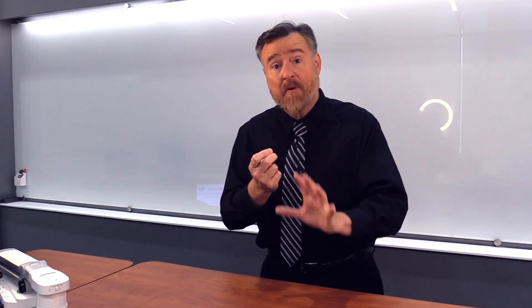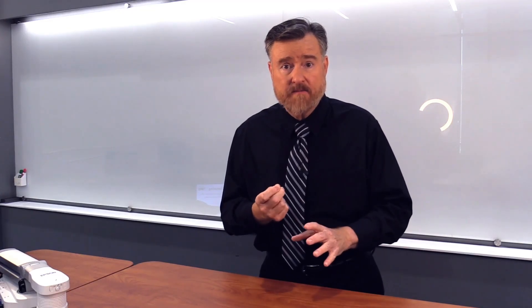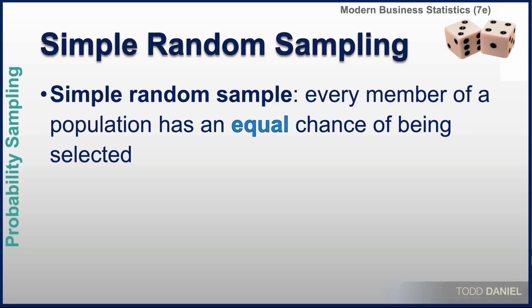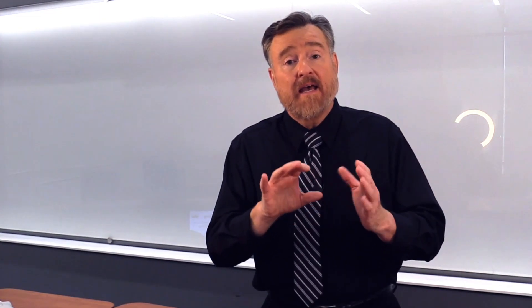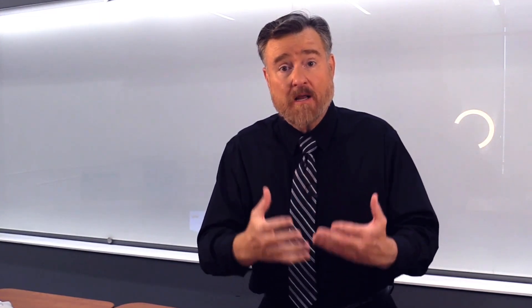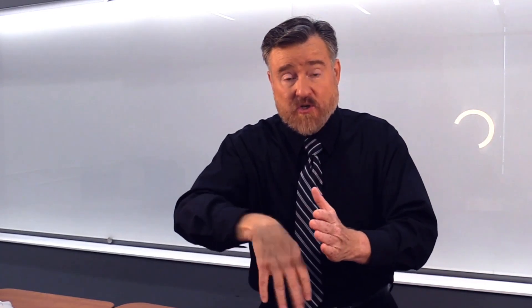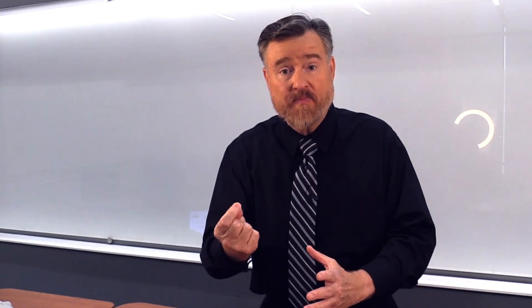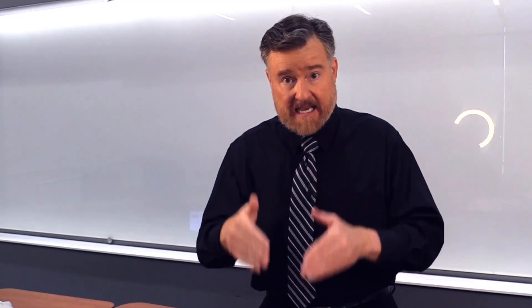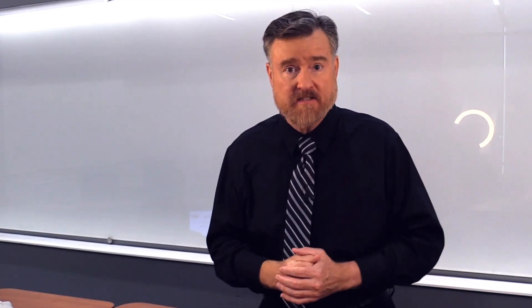Every ticket in the hopper has an equal chance of being selected. Or we use a lottery method, such as ping pong balls with numbers written on them — every ping pong ball in that population has an equal chance of being selected. Or perhaps we could simply write each person's name on a piece of paper, put all of those pieces of paper into a hat, stir it around, and select names at random. In every case, each individual has an equal chance of being selected.